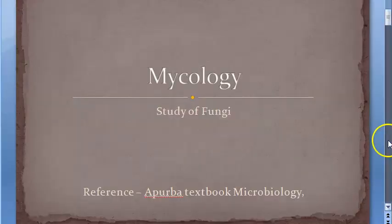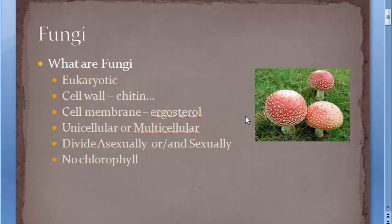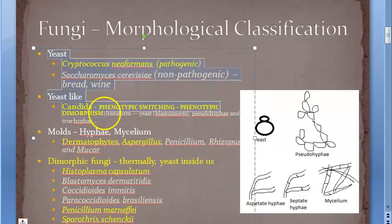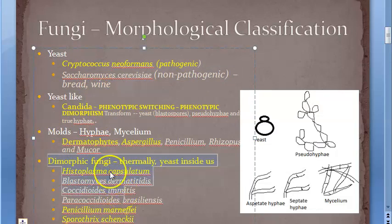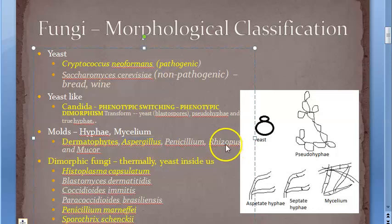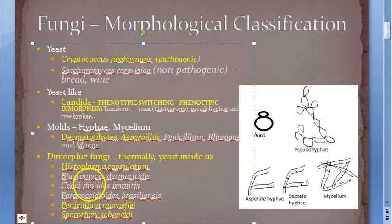As seen in our mycology video, fungi are eukaryotic, have a chitin cell wall, and are mostly saprophytic without chlorophyll. They are classified into yeast, yeast-like, mold, and dimorphic. Candida is yeast-like; Cryptococcus is a true yeast. Aspergillus, Rhizopus, and Mucor are molds; Histoplasma and Coccidioides are dimorphic. All of these can cause fungal keratitis.